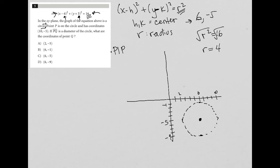Point P is on the circle and has coordinates 10, negative 5. Well, we already found point P. That's right there. 10, negative 5 is this point. This is point P.